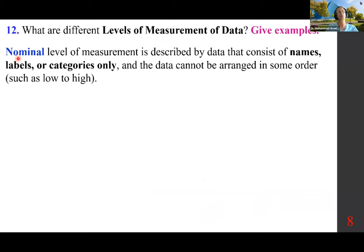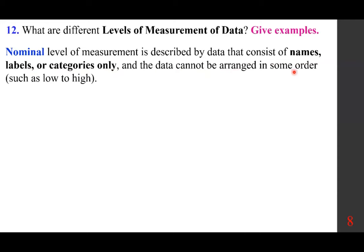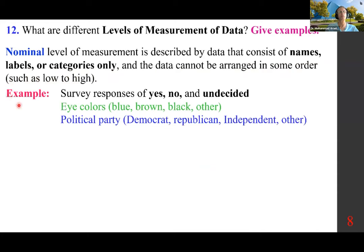Nominal level of measurement is described by data that consists of names, labels, or categories only, and the data cannot be arranged in any order such as low to high. Examples: survey responses of yes, no, and undecided; eye colors — blue, brown, black, other; political party — Democrat, Republican, independent, other.